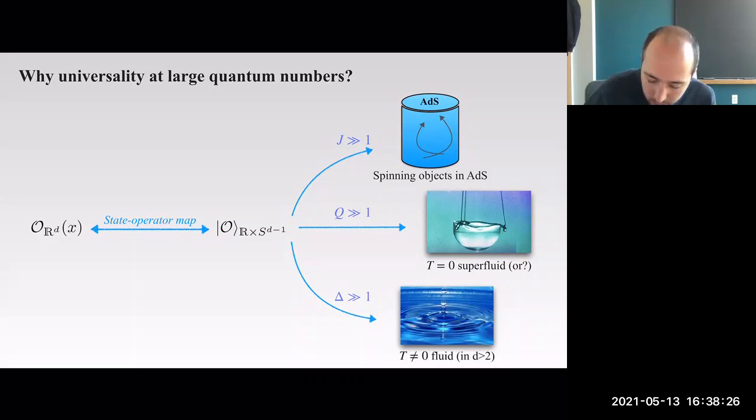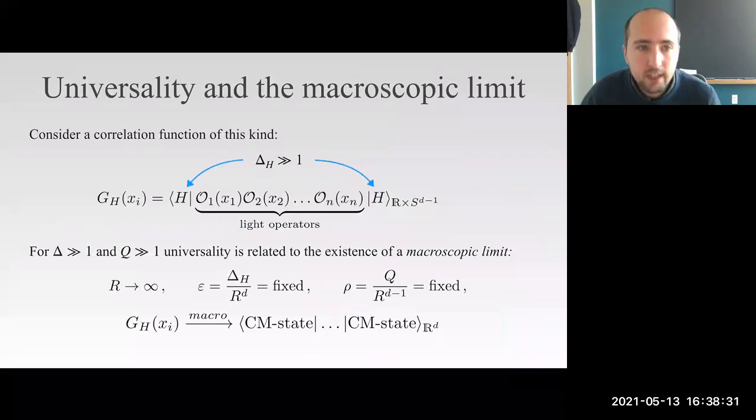The sector of large scaling dimensions is associated instead to some finite temperature phase of the theory. This is generically described by thermodynamics or hydrodynamics, at least in dimensions bigger than two where thermalization generically occurs. This picture justifies, at least on intuitive grounds, why there is such a huge amount of universality. In the case of large charge and large scaling dimension, universality is highly related to the existence of a macroscopic limit.